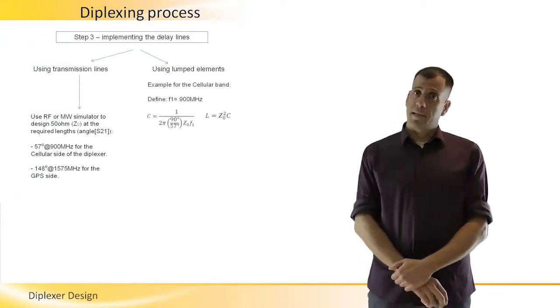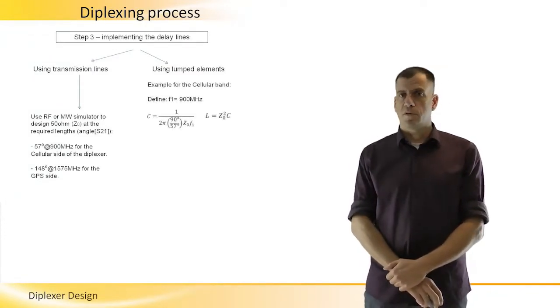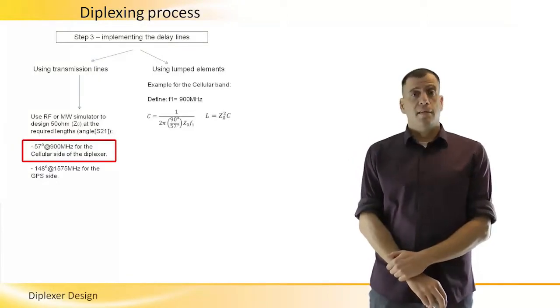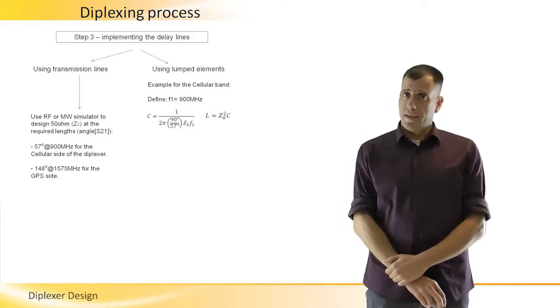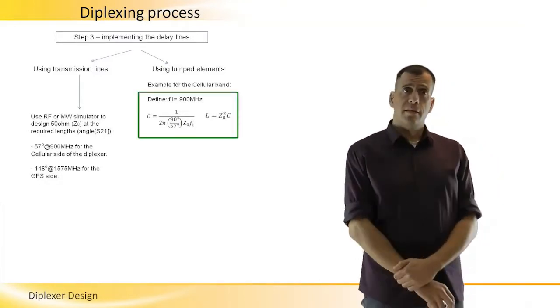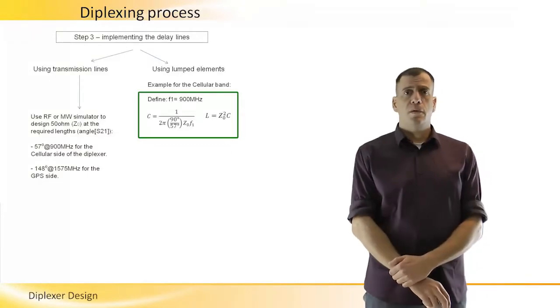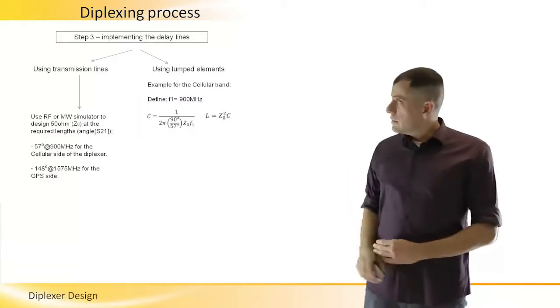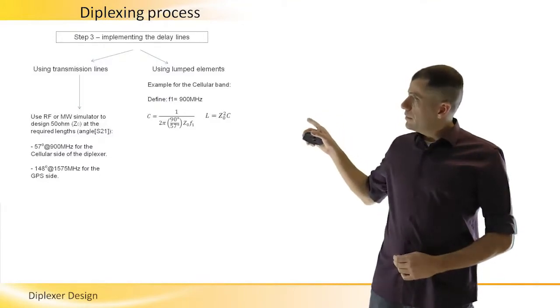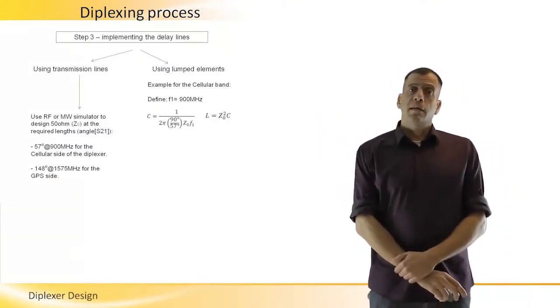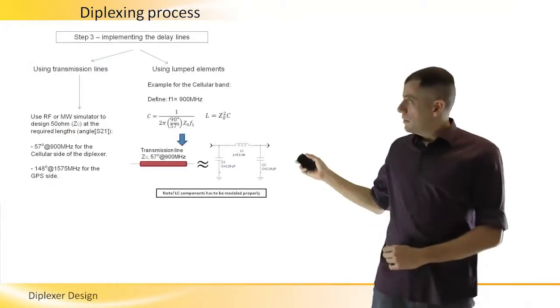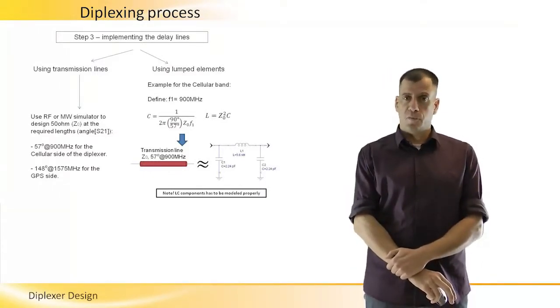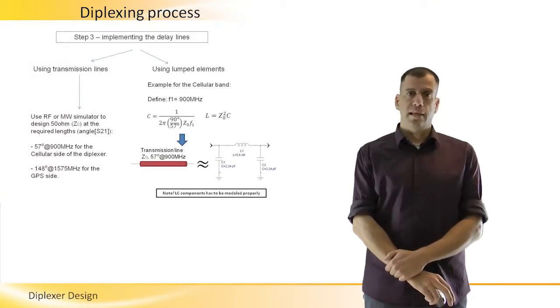If we wish to use lumped elements, we will have to go through the following process. Let's look at the cellular side, for instance, where we need 57 degrees transmission line at 900 MHz. If we define F1 to be 900 MHz, then the following two formulas will be used to calculate the capacitor and the inductor that we need. Note the 75 degrees in the formula is here. Implementing a pi structure, as described here on the bottom side of the slide, with the calculated inductor and capacitor from before, will have almost equivalent delay to what we need.